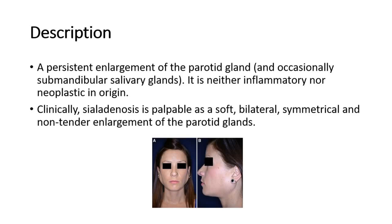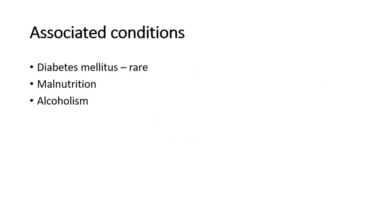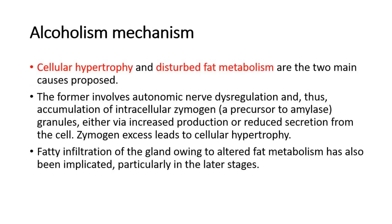Clinically, sialadenosis is palpable as a soft, bilateral, symmetrical, and non-tender enlargement of the parotid glands. It is associated with diabetes mellitus, malnutrition, and alcoholism.